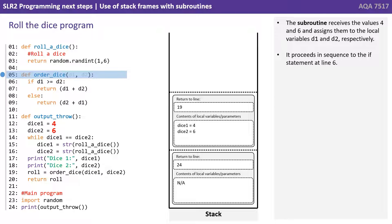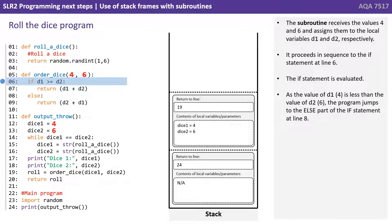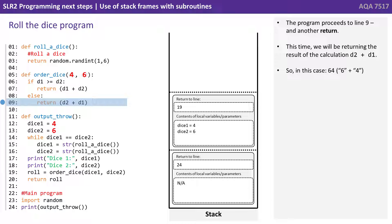The subroutine receives the values 4 and 6 and assigns them to the local variables D1 and D2 respectively. It proceeds in sequence to the IF statement at line 6. The IF statement is evaluated: as the value of D1, which is 4, is less than the value of D2, which is 6, the program jumps to the ELSE part of the IF statement at line 8. The program proceeds to line 9 and another return, this time returning the result of the calculation D2 concatenated to D1 — so in this case, 6 concatenated to 4.